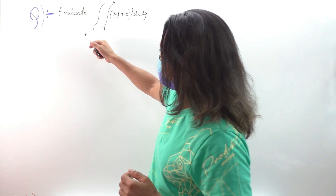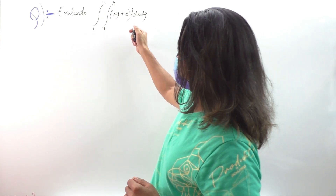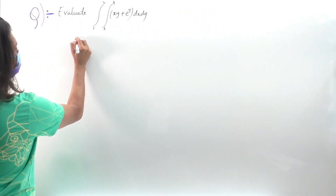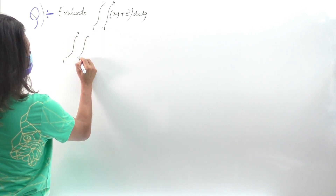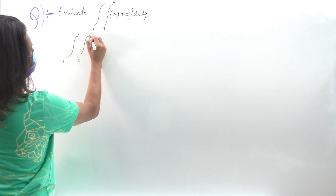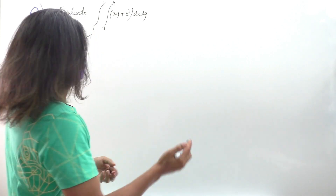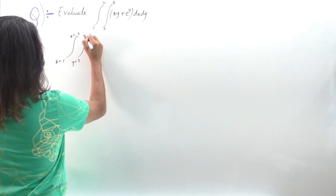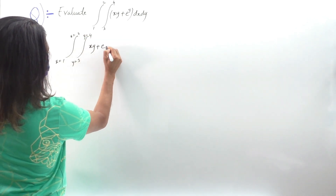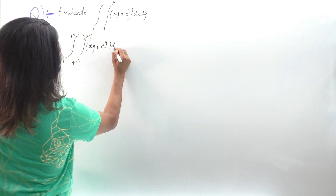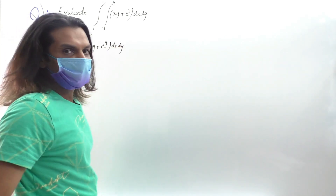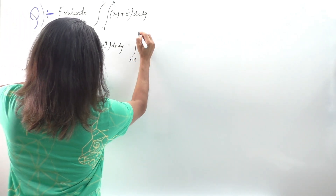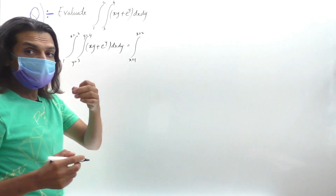Next problem: evaluate the integral from 1 to 2, integral from 3 to 4, of (xy + e^y) dx dy. This is a simple question where all limits are constants, so x goes from 1 to 2 and y goes from 3 to 4. We will integrate with respect to y first, so the outside integral x = 1 to 2 stays as it is.